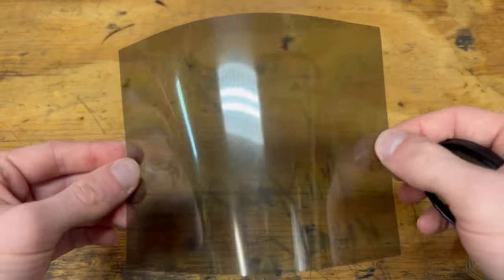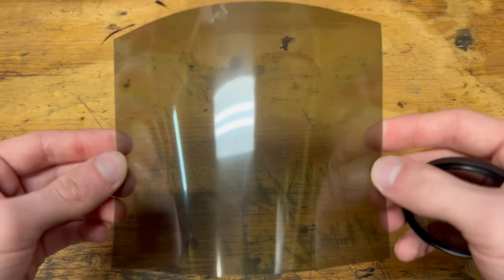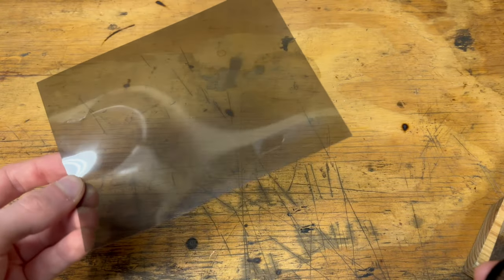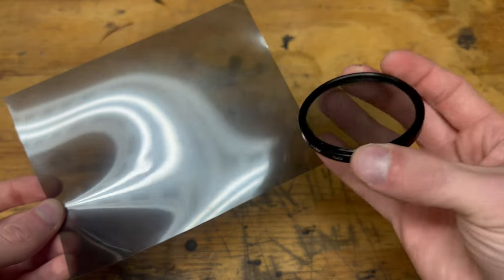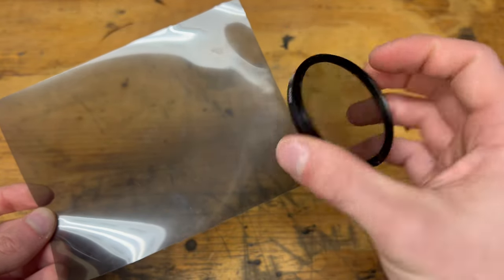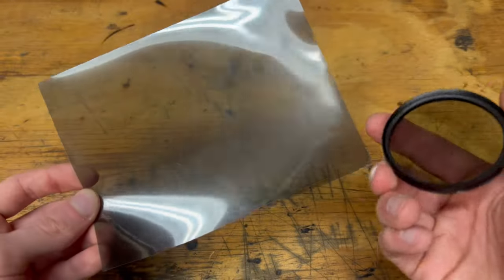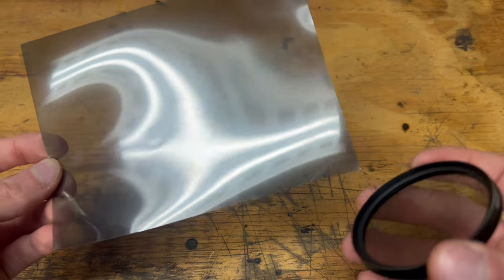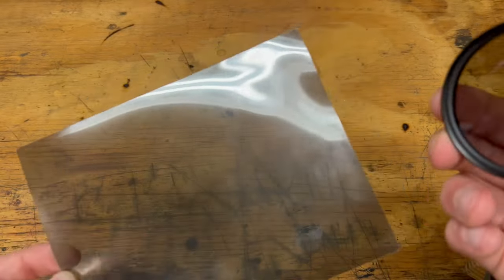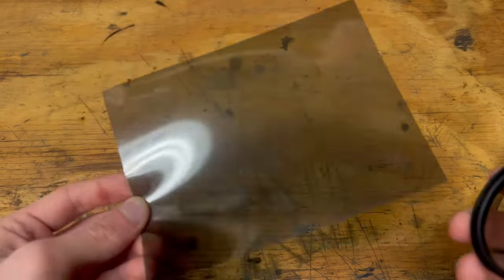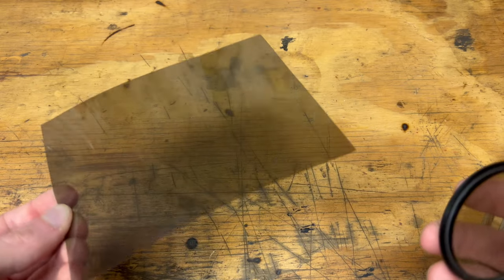Polarizing film is a thin sheet of material that filters out light waves oscillating in a certain direction while allowing light waves oscillating in other directions to pass through. The polarizing film uses a specific coating containing long, thin molecules oriented in one specific direction.